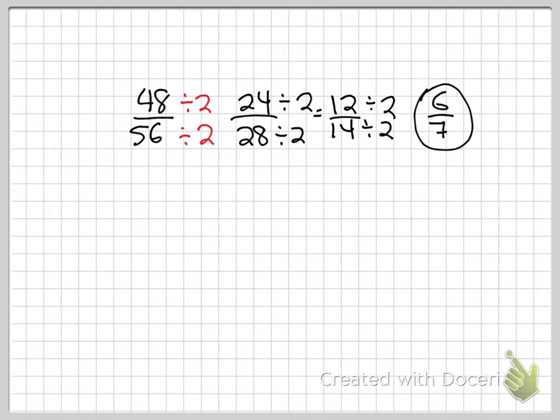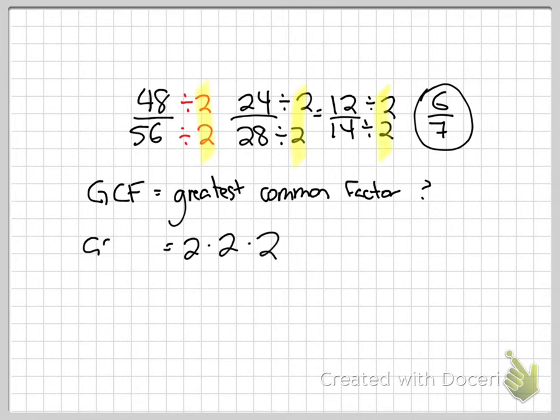What if this was a problem where they were asking me for the GCF or the greatest common factor? I didn't do this in a single step. So how can I know what my greatest common factor is? It's actually pretty simple to pull out the greatest common factor from this. All I do is take each number that I divided by. So 2 times 2 times 2. And when I multiply all of those numbers together that I divided by, 2 times 2 is 4, 4 times 2 is 8. That's going to get me back to my greatest common factor. So this method is also useful and helpful to find the greatest common factor.